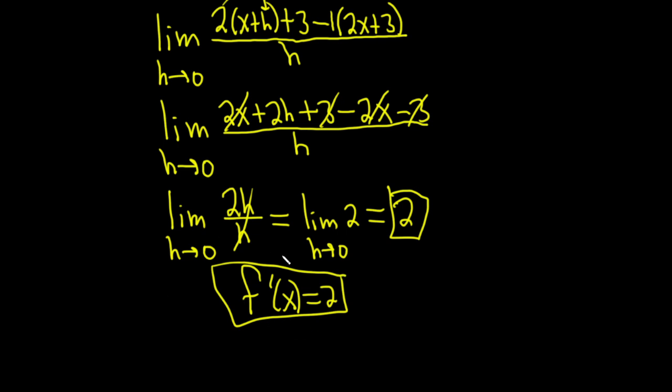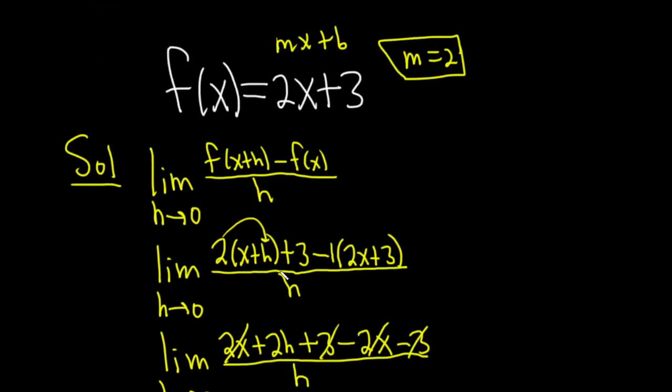So kind of a fun problem to show that the calculus version of slope, which is the derivative, is the same as the algebra version of slope, which is restricted to straight lines. Y equals mx plus b. We say that m is the slope. So yeah, kind of fun. I hope this video has helped someone out there in some way. Good luck.